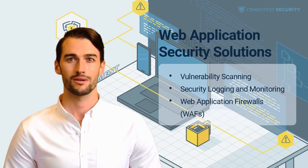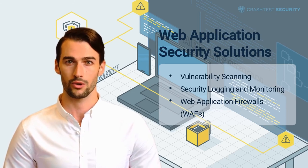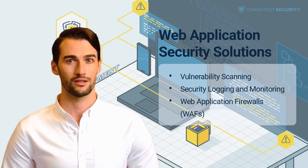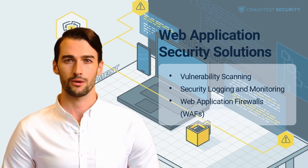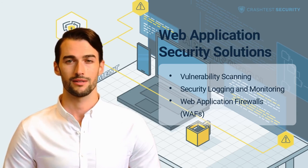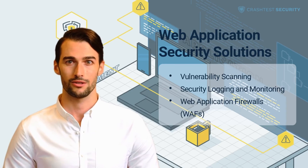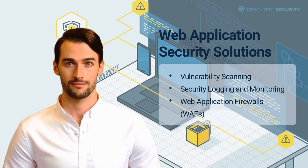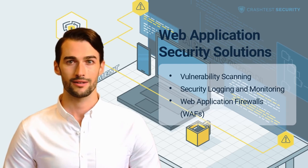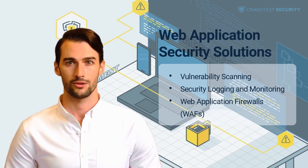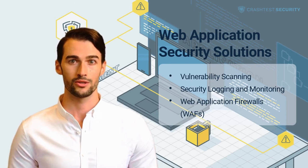A WAF can be either network-based, host-based, or cloud-based. Cloud-based WAFs offer turnkey installation and are more accessible and affordable to implement. These WAFs can protect applications on-premises, in the private cloud, or in public offerings such as Google Cloud, Microsoft Azure, and AWS. For example, Prisma Cloud, Cloudflare, and Google Cloud Armor are popular cloud-based web firewall security solutions that improve protection by monitoring and filtering traffic between the web server and the internet.